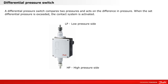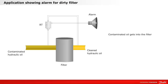A differential pressure switch compares two pressures and acts on the difference in pressure. On the following pages, you can see a differential switch application and the contact function for falling pressure. Let's take a look at an alarm application for a dirty filter showing rising differential pressure.